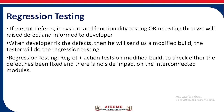Now, regression testing. If we find a defect during system functionality testing or retesting, we raise the defect and inform the developer. When the developer fixes the defect, they send us the modified build, and then the tester performs regression testing. Regression testing checks whether the defect that was present has been fixed, and also ensures there is no side impact on the interconnected modules.